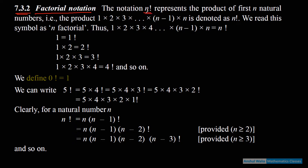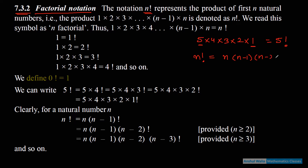n factorial क्या होता है — जो हम fundamental counting का principle करते हैं, जैसे 5×4×3×2×1, इसकी single notation है '5 factorial'। अगर आप n factorial बोल रहे हैं तो इसका मतलब है n से शुरू करो, एक-एक कम करते जाओ n−1, n−2... जब तक 1 नहीं पहुँच जाता। एक condition याद रखनी है: 0 factorial = 1. 1 factorial भी 1 आएगा, और 0 factorial is also 1.